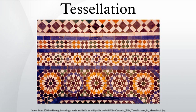A monohedral tiling is a tessellation in which all tiles are congruent — it has only one prototile. A particularly interesting type of monohedral tessellation is the spiral monohedral tiling. The first spiral monohedral tiling was discovered by Heinz Voderberg in 1936, with the Voderberg tiling having a unit tile that is a non-convex enneagon. The Hirschhorn tiling, published by Michael D. Hirschhorn and D. C. Hunt in 1985, has a unit tile that is an irregular pentagon.